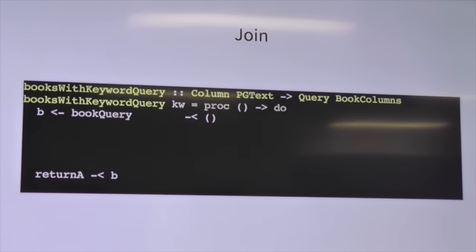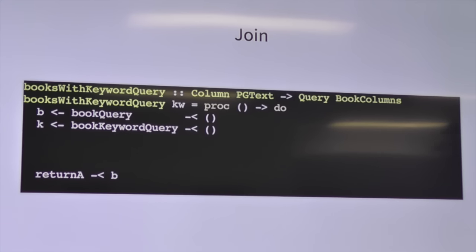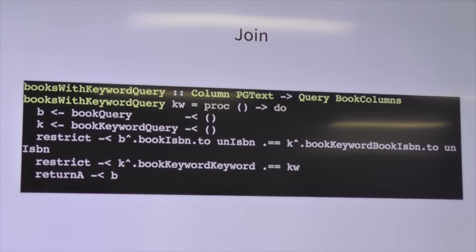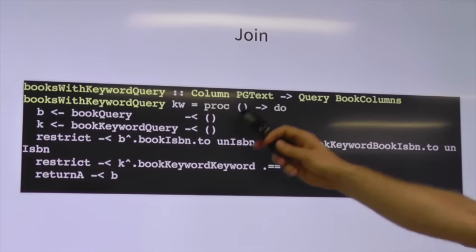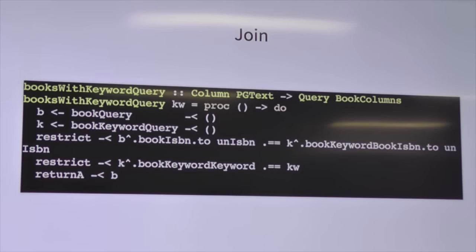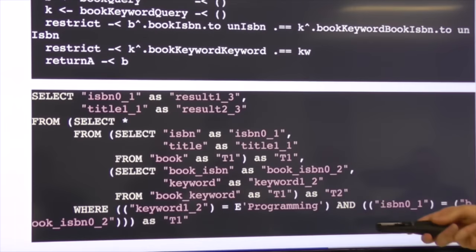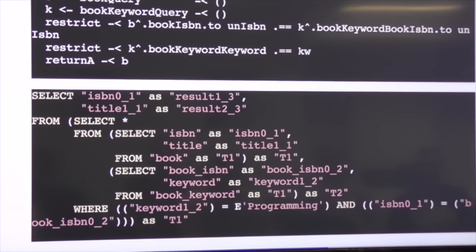Joining — joining is why we use SQL. We may as well be using a key-value store if we're not going to join. It's as simple as putting two queries in your arrow comprehension. We select all the books, we have a table off to the side with all the keywords for that particular book, we join to that, and restrict by joining the ISBNs of the satellite table and the book itself. Then we restrict by finding the keyword we're after. This generates the query you'd expect, and Opaleye is smart enough to AND the two restrictions together nicely.